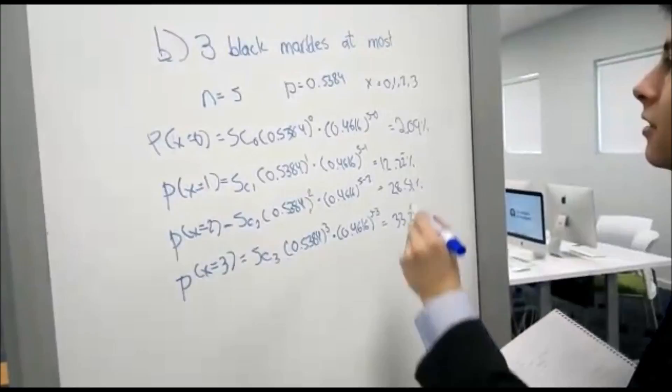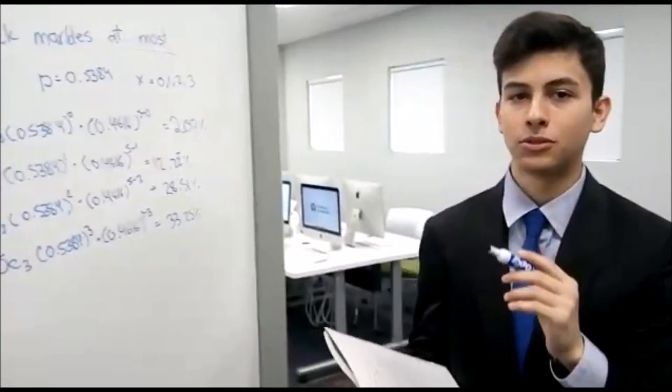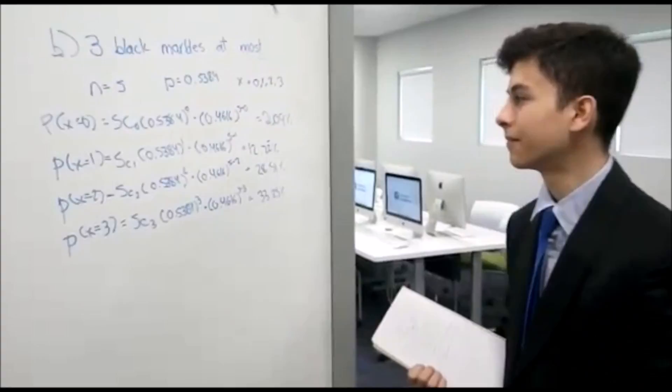So in problem B, we got the exception that it is asking us to get 3 marbles at most. And here the keywords would be at most, which would be asking you from any values from 3 below. So in this case, we would do the probabilities for 0, 1, 2, and 3.